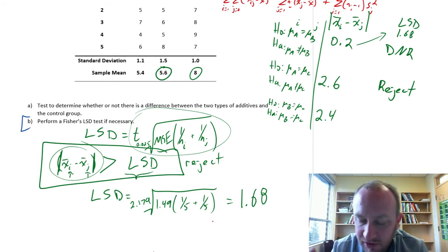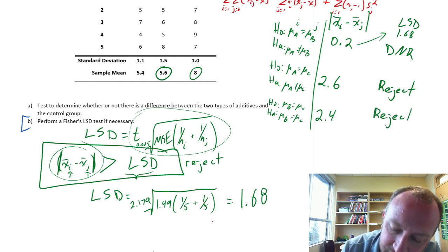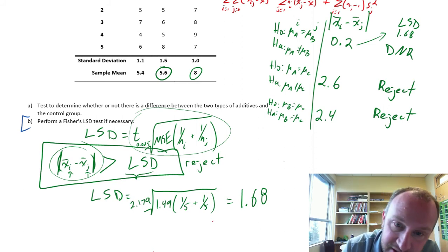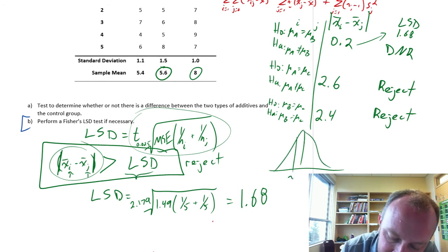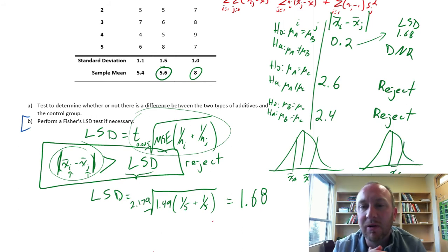A and c are different. And, comparing b and c, 2.4 is also greater than 1.68. So, we can comfortably reject. What does this tell us? We have here two distributions. We have one distribution where sample a and sample b came out of. And we have a second distribution over here where sample c came out of.